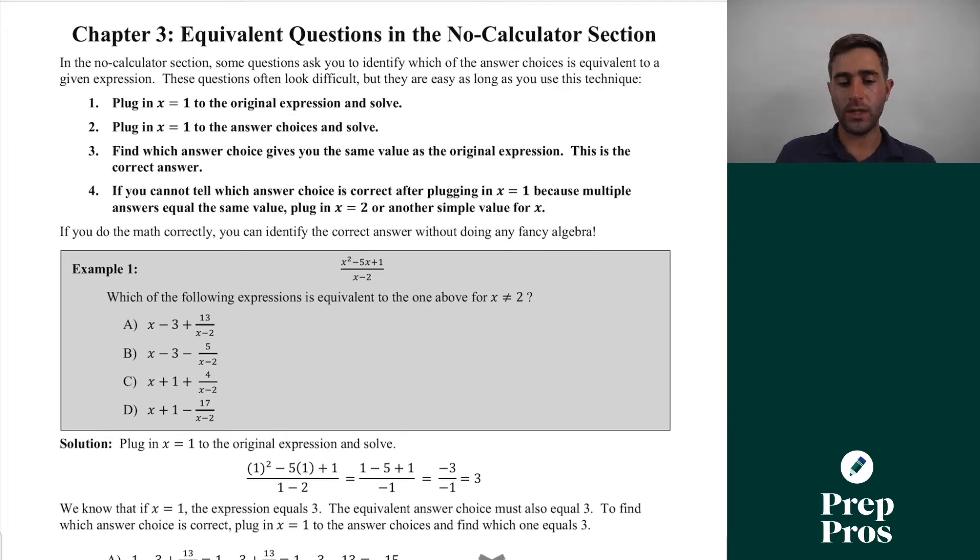What these are is you're always going to basically be asked a question like which of the following expressions is equivalent to the one above. Then often we're going to get this restriction, which is basically telling us for x values that do not equal two. This is pretty much always going to be because of undefined values. But because we're saying that these expressions are equivalent to some answer choice, we have a very easy way that we can work around these questions and find the right answer if we are uncomfortable doing it the technically correct way.